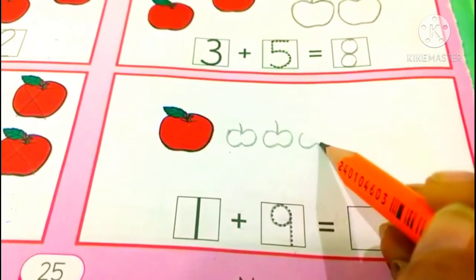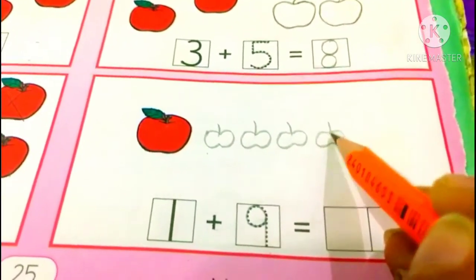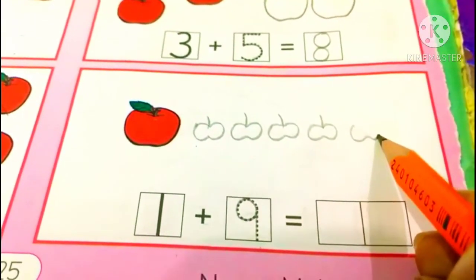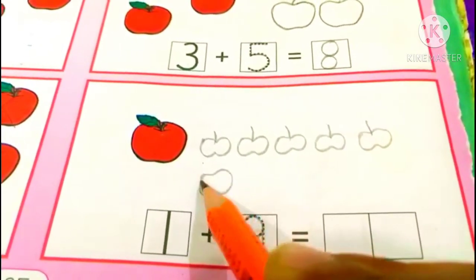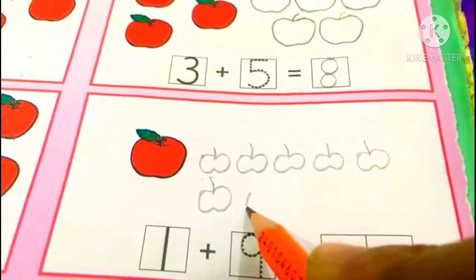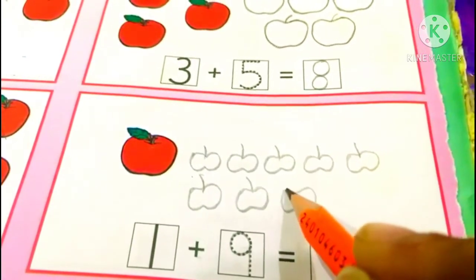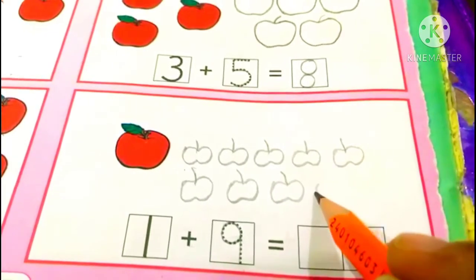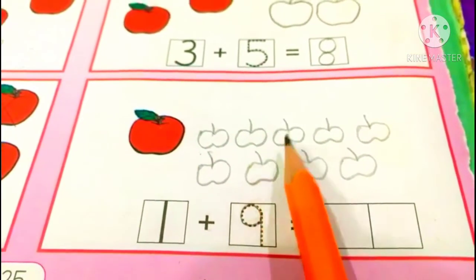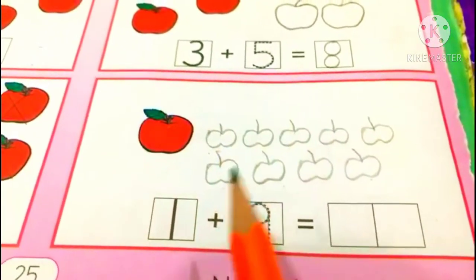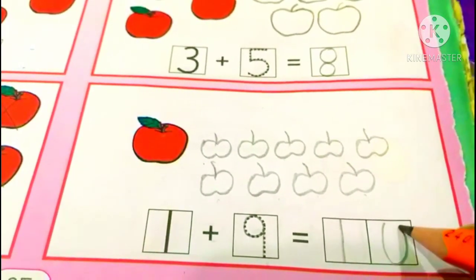2, 3, 4, 5, we will add 9 more. 1, 2, 3, 4, 5, 6, 7, 8, 9, 10. Now they are altogether 10 apples. When we add 9 apples in 1 apple, it will become 10 apples.